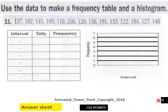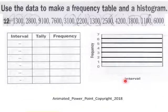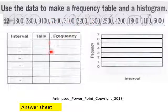16 points for page six. And then page seven: same thing, data, frequency table, and then a histogram here.